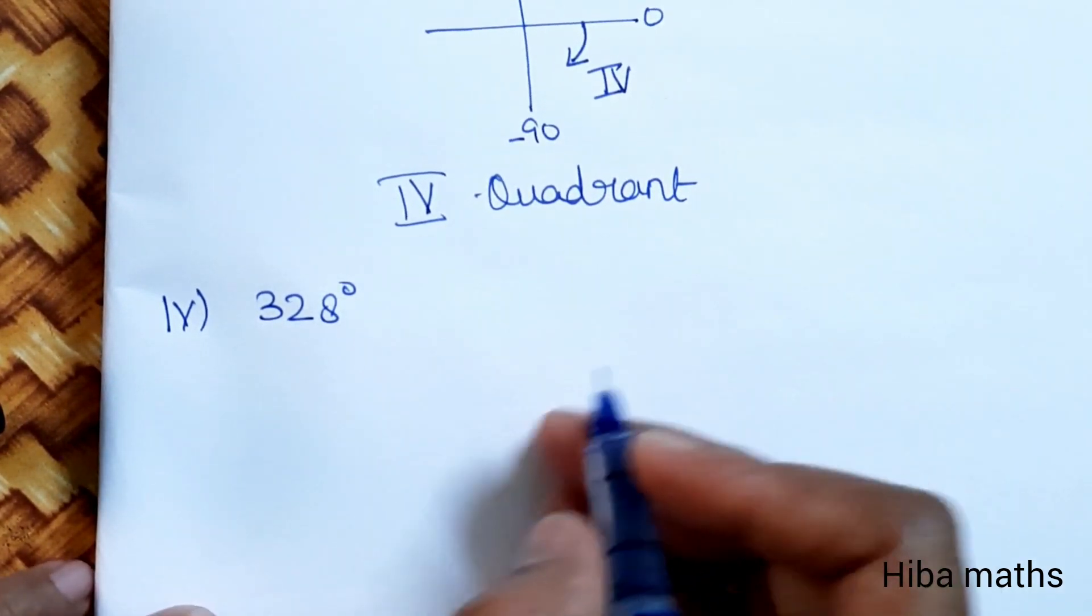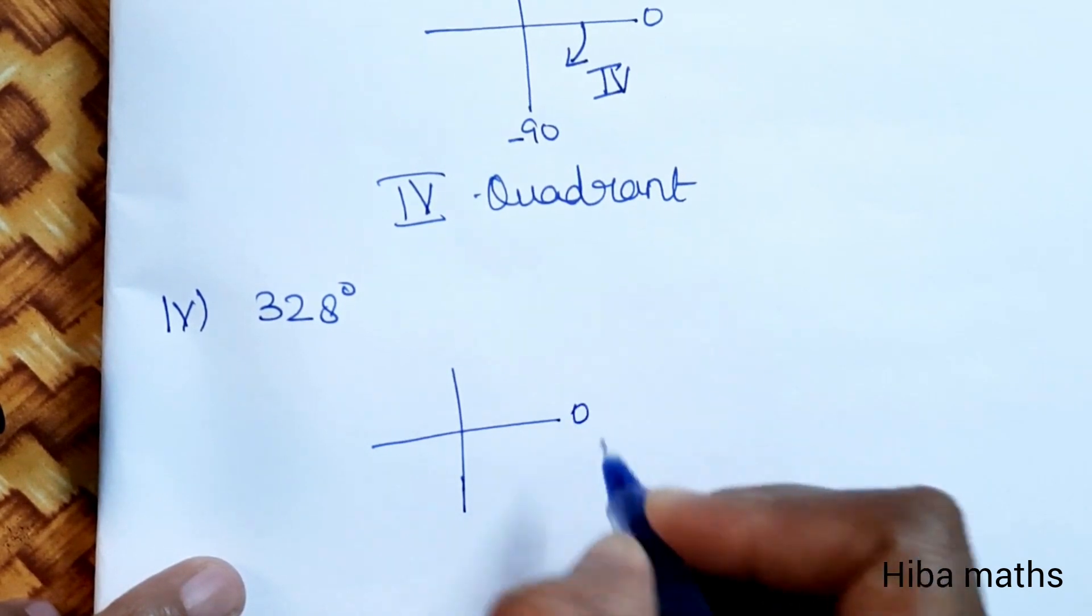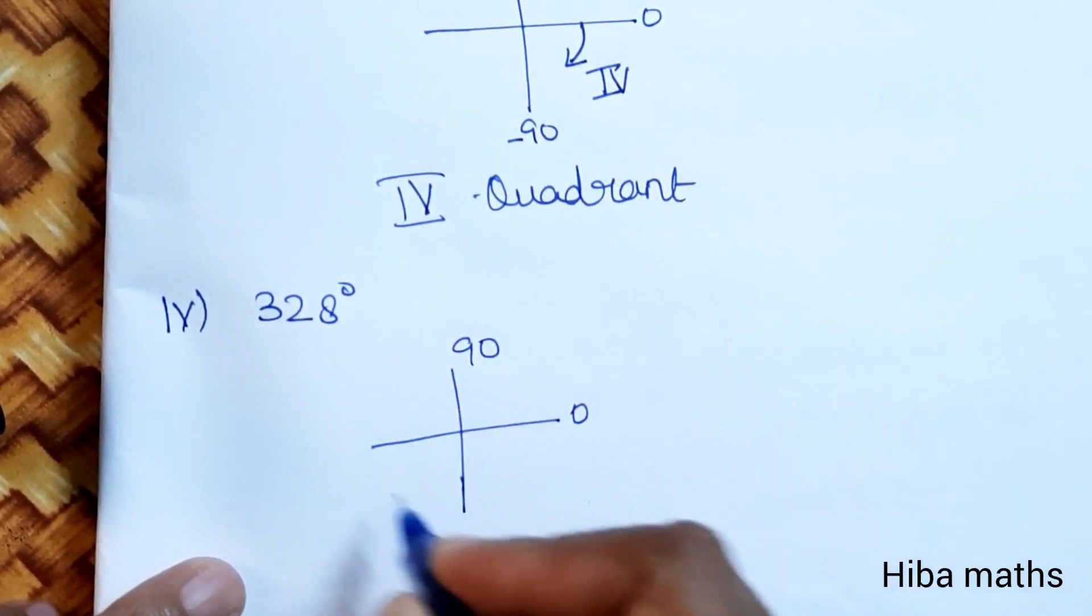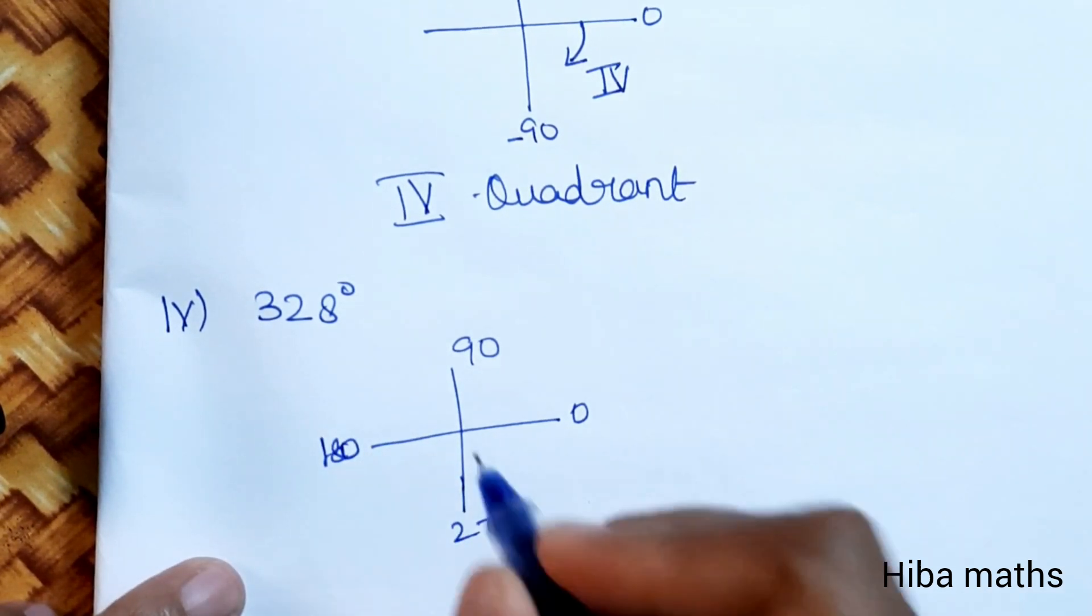Fourth subdivision: 328 degrees. This is less than 360. Marking 90°, 180°, 270°... 328° is between 270° and 360°, so this is in the fourth quadrant.